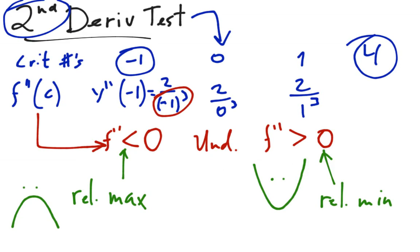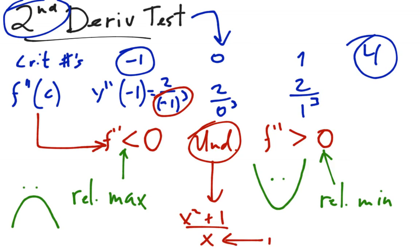As for why x equals 0 gives an undefined second derivative: the original function x squared plus 1 over x is not continuous at x equals 0, so no derivatives are defined there. It's still important to include it as a candidate, but it doesn't give a relative extremum because the function is not continuous there.